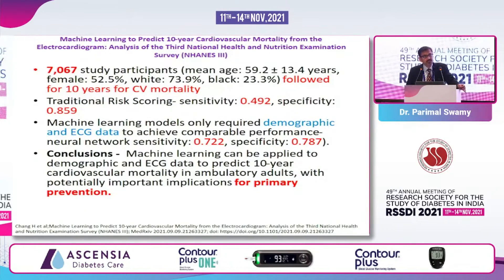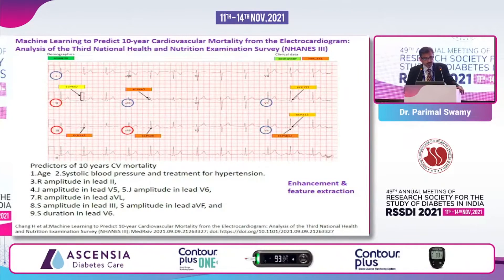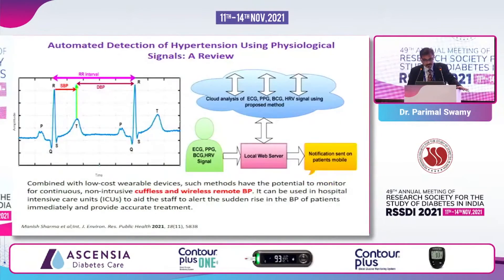In diabetes practice, it is our job to predict cardiovascular mortality. In a very recent study published in 2021, a study used a huge amount of data from the National Health and Nutritional Examination Survey of the US — 7,000 patients were included. Just based on ECG and demographic data, age of the patient, and systolic blood pressure, this system could predict 10-year mortality with a reasonable amount of specificity and sensitivity. Not only that, the AI could extract various attributes of long-term mortality from a normal-looking ECG. Indian researchers from IITs could correlate the intervals between different waves of the ECG with systolic and diastolic blood pressure.